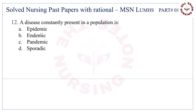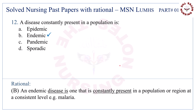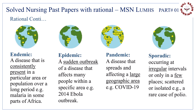Question number twelve: a disease constantly present in a population is. Correct answer is B, endemic. You must be clear on these important epidemiological terms to avoid confusion between them.